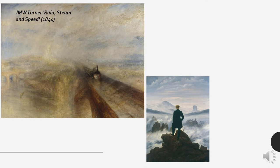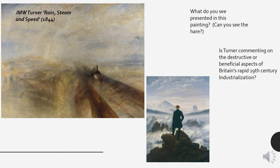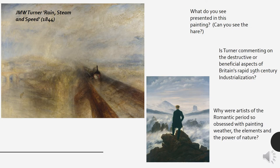Another example we look at on the course is JMW Turner's Rain, Steam and Speed from 1844. What do you see presented in this painting? An interesting debate about this painting: can you see the depiction of a hare? Is Turner commenting on the destructive or beneficial aspects of Britain's rapid 19th century industrialisation? And why were artists of the Romantic period so obsessed with painting weather, the elements and the power of nature?